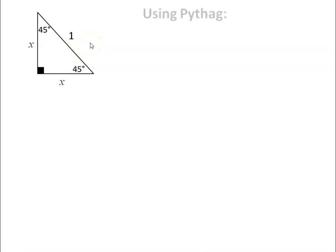Using Pythagoras, I know that a squared plus b squared equals c squared. And in this case, x squared plus x squared equals one squared. I can simplify that a little bit. And to isolate x, I would have to divide by two and then take the square root.